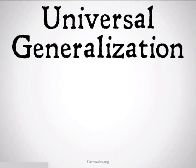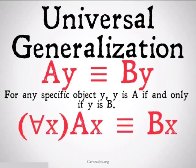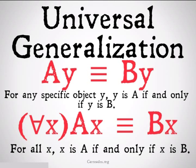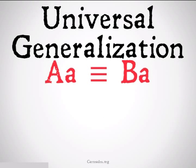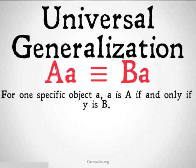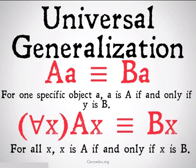A valid example of universal generalization would be going from 'Y is an A is equivalent to Y is a B' to 'for all X, X being an A is equivalent to X being a B.' An invalid version would be going from 'A as an A is equivalent to A as a B' to 'for all X, X as an A is equivalent to X being a B.' This is not valid because just because the equivalence relation holds for one specific case doesn't mean it holds for all cases.